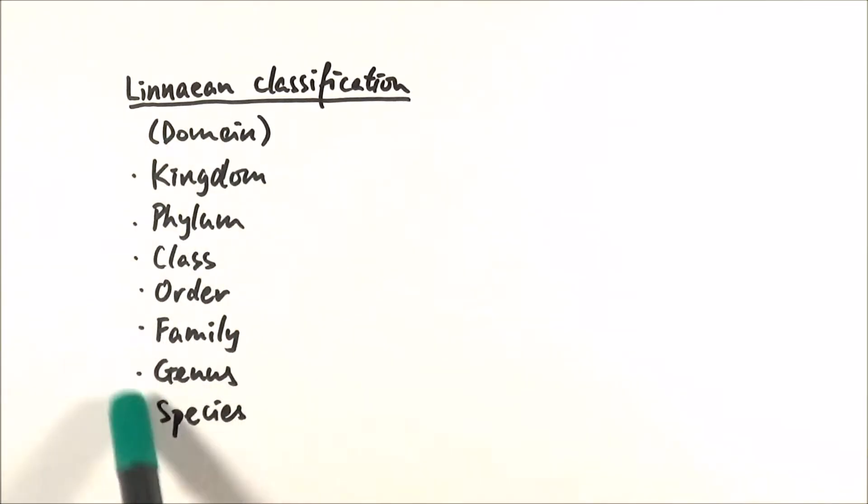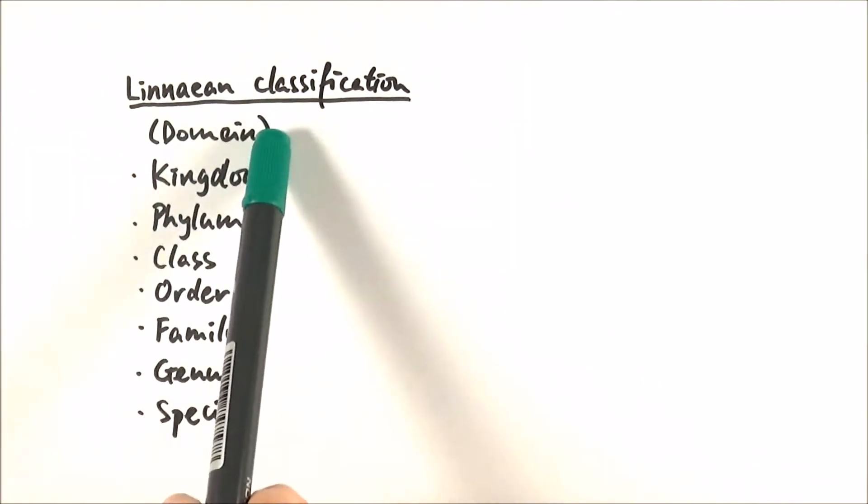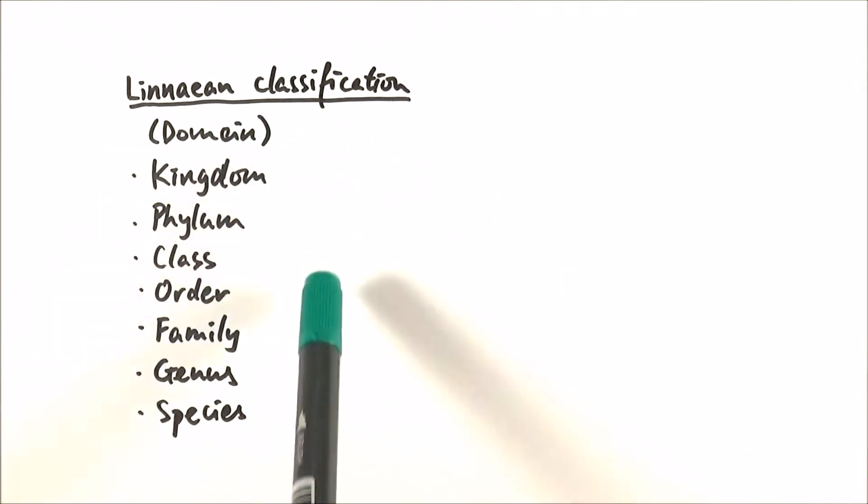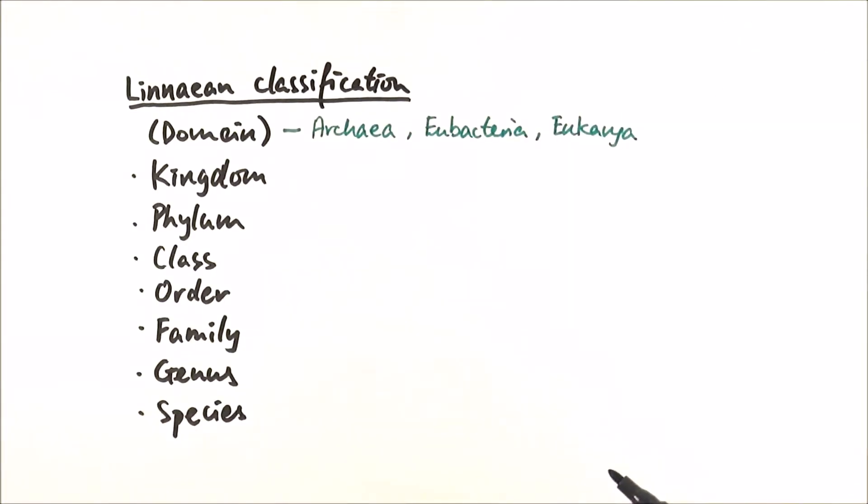That's why this classification system was developed by a Swedish botanist called Carl Linnaeus. Now here you can see that I put domain in brackets because he wasn't the one who set this up, but people later on decided that we can even summarize all of them into three big domains: Archaea, Bacteria, and Eukarya. As the name implies, Eukarya refers to eukaryotes, the more developed organisms with the nucleus. Then we can have a look at the actual classification system developed by Linnaeus.